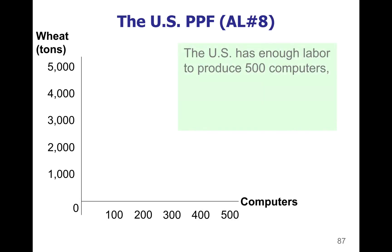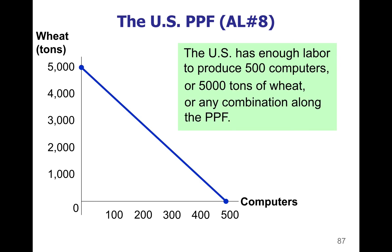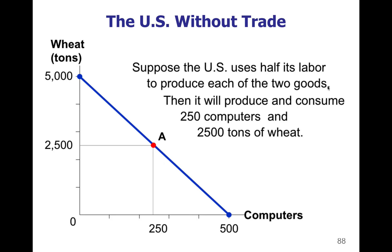So if you have your United States PPF graph — the one with wheat and computers that has a straight line — your wheat should be at a maximum of 5,000 and your computers at a maximum of 500. Now get out a different colored pen, different from the one you used to draw your graph. I want you to mark this point. We're going to assume that the United States, if it does not trade with Japan and chooses to make its own wheat and computers, will use 50% of labor hours on wheat and 50% on computers. That means we get 2,500 wheat and 250 computers. Mark that as point A on your graph, and draw lines over to the axes labeled with the amounts of wheat and computers associated with that point.